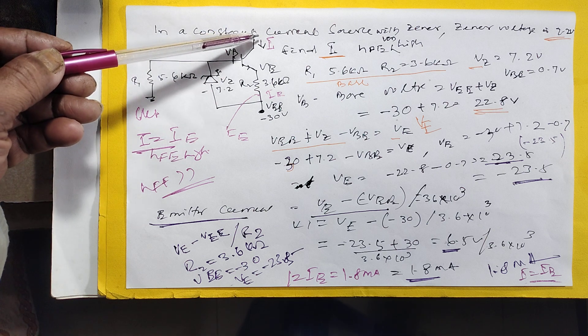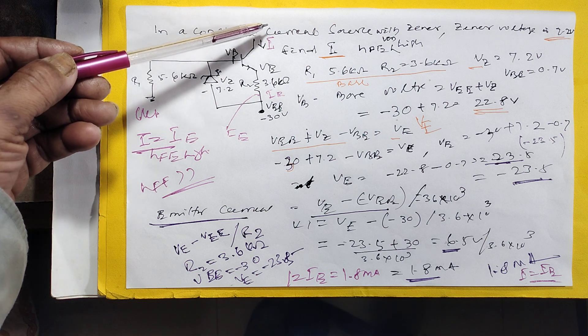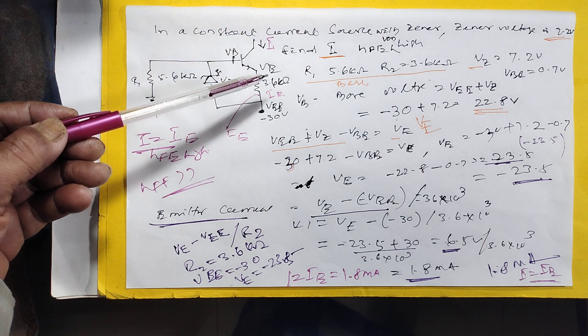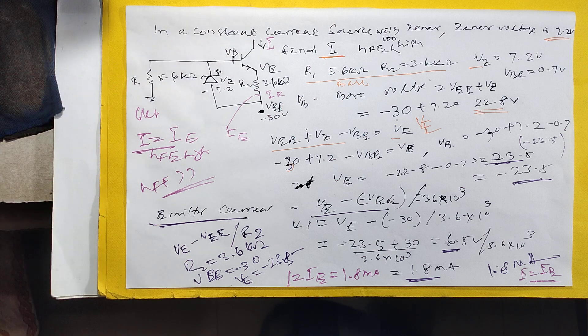But you want this current, current collector current. Because when HFE is high, IC is equivalent to IE. So current IE is 1.8 milliampere, completed.